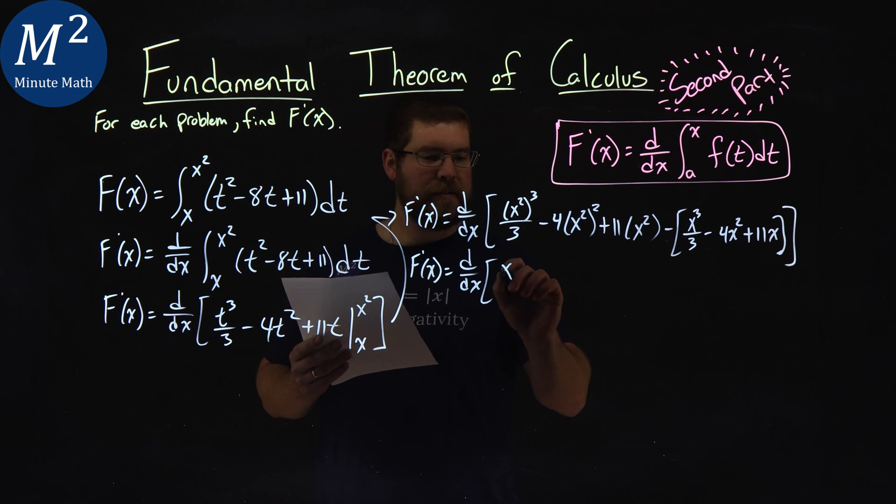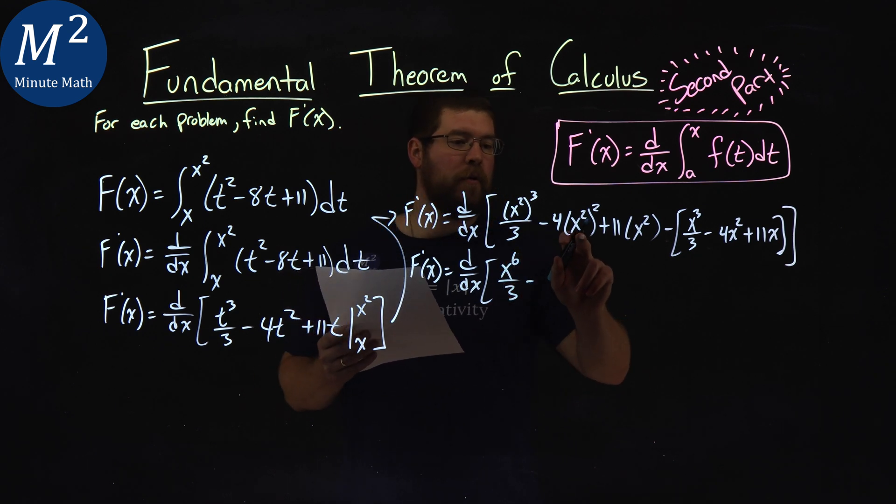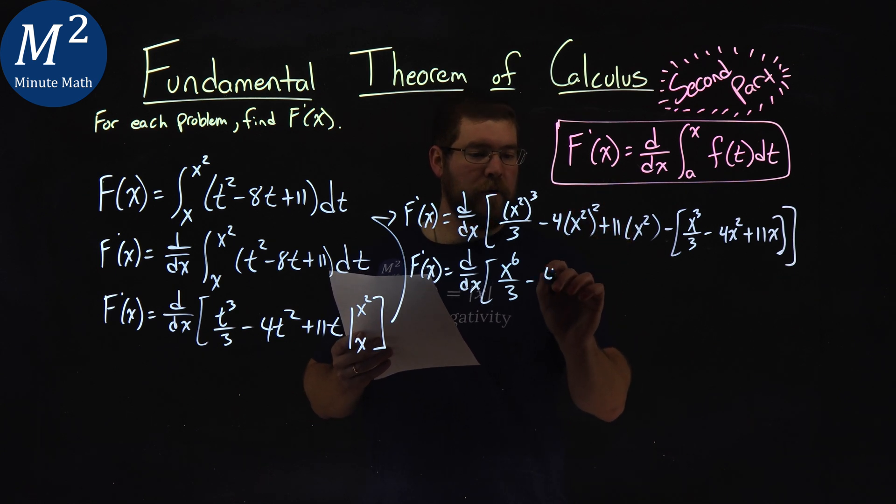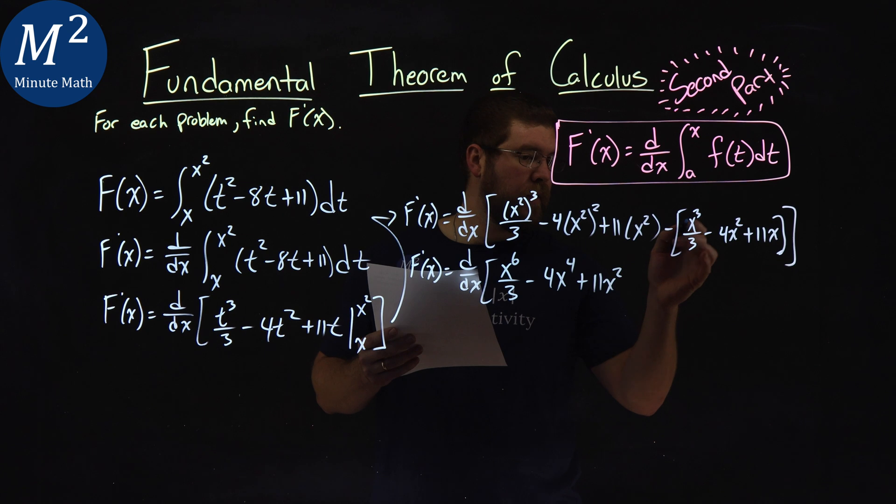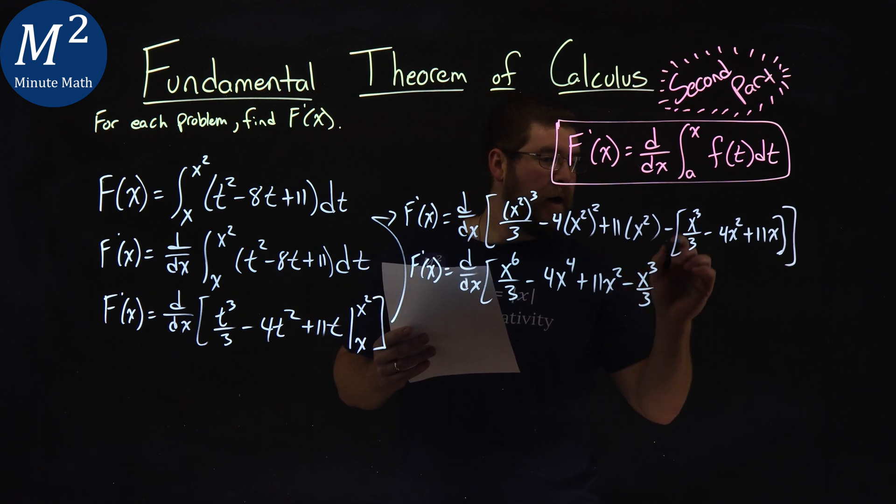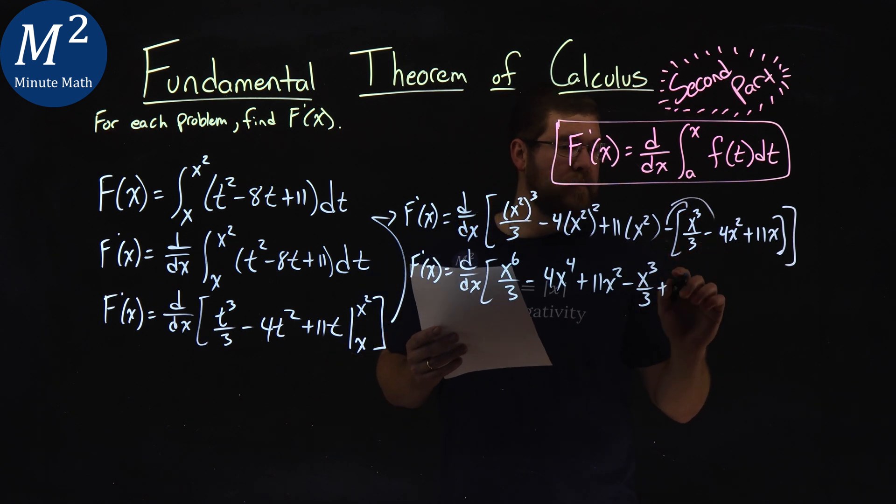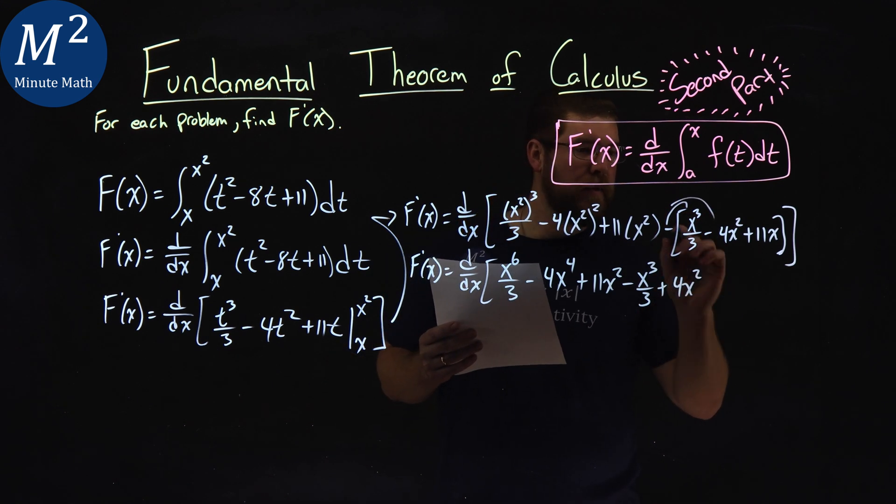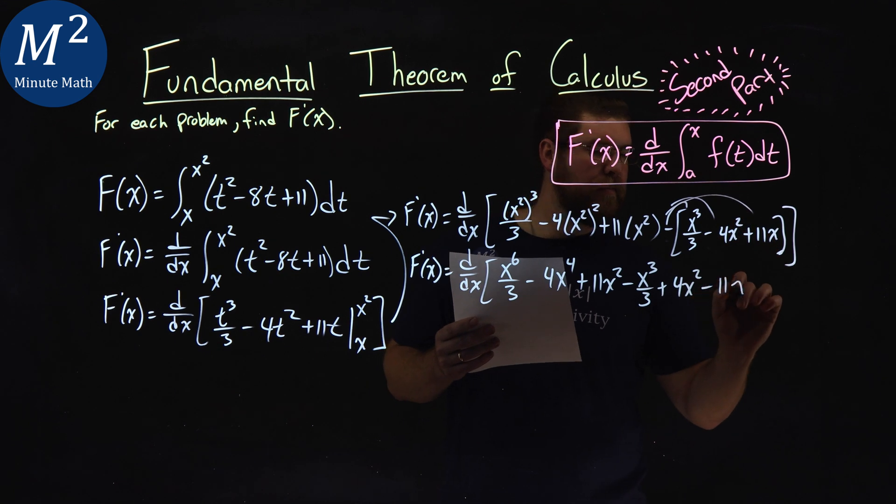Well, simplifying this first part, x squared to the third power is x to the sixth over 3. Minus now, we have 4x squared to the second power. So, we have 4x to the fourth power plus 11x squared. Distributing that out, minus x to the third over 3 plus, right? All parts, plus negative negative positive, 4x squared. And the last part is minus 11x.